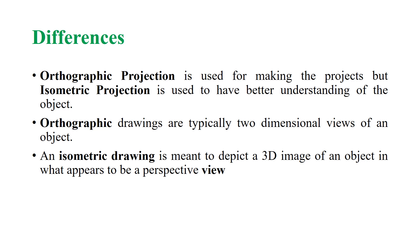Now let us see the differences between orthographic and isometric. Orthographic projection is used for production drawings, where you need details of all components inside an assembly. For better understanding, you choose isometric projections, which give a 3D view. For production processes where detailing is very important, you choose orthographic projections. Orthographic drawings are two-dimensional views, whereas isometric drawings depict a 3D image as it appears to a person.